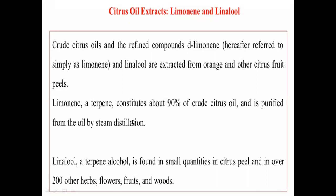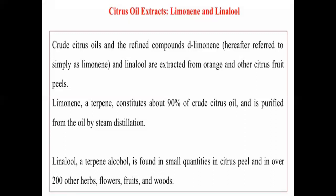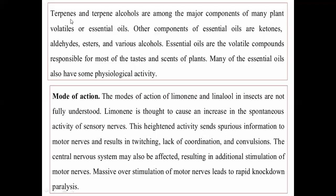In steam distillation, you subject the oil on one side and it distillates into another pot — that is how you can separate limonene. Linalool is a terpene alcohol found in small quantities in citrus peel and in over 200 other herbs, flowers, fruits, and wood. Limonene is more abundant in citrus oil. Terpenes and terpene alcohols like limonene and linalool are among the major components of many plant volatile and essential oils.